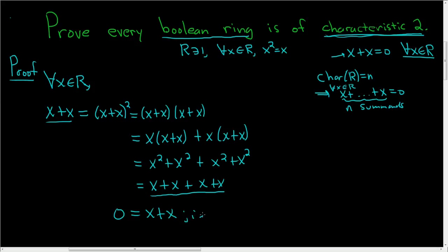At last, we have x plus x equal to 0. And that proves that every Boolean ring is of characteristic 2, pretty easy proof. I hope that made sense.